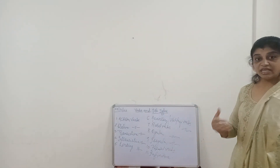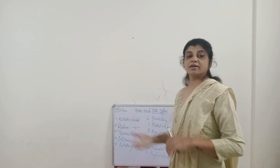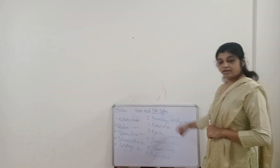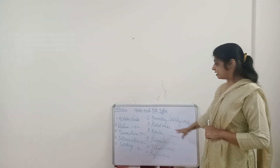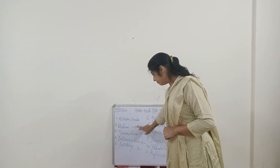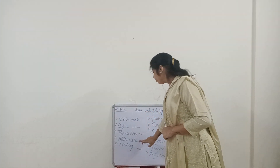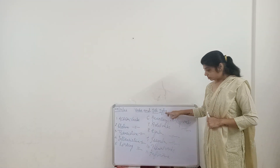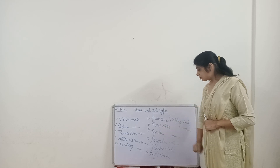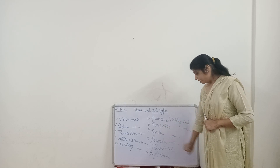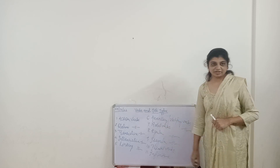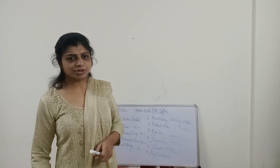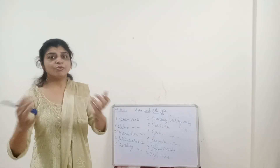When you frame a sentence you must also know the three forms of verbs, which I'll cover in another class. So, verbs — there are 11 types: action verbs, stative verbs, transitive, intransitive, linking, helping or auxiliary, then modal verbs, regular, irregular, phrasal and infinitive.